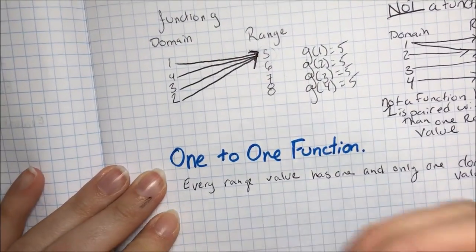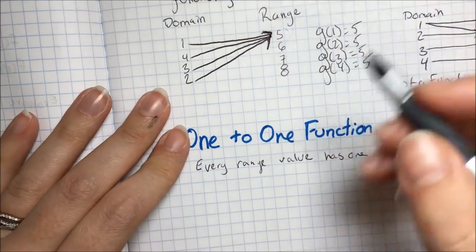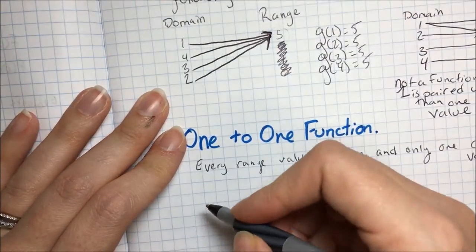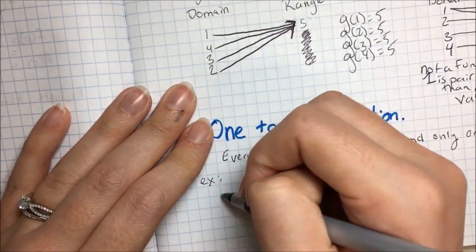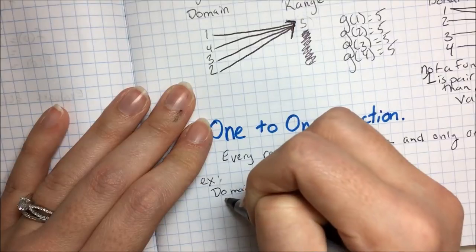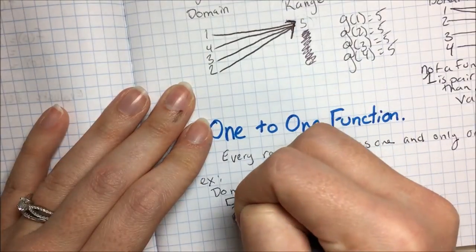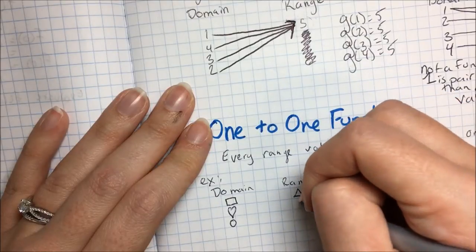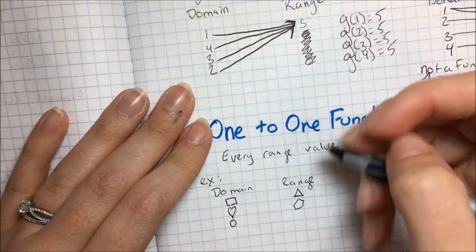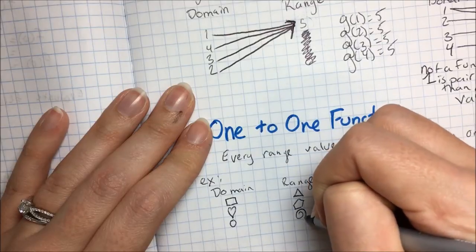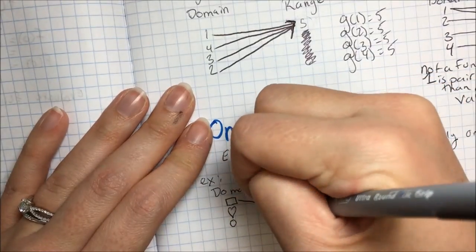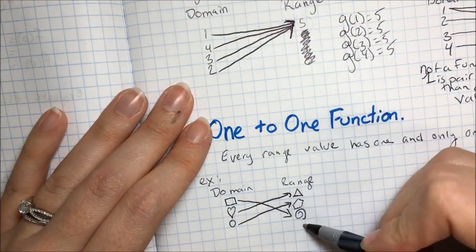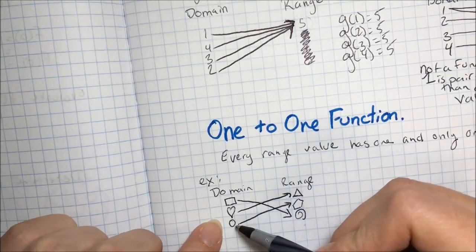A one-to-one function example: domain is box, heart, circle; range is triangle, pentagon, spiral. The box goes to the spiral, the heart goes to the triangle, and the circle goes to the pentagon. This is one-to-one because every one of my range values has one domain value, and it's a function because every one of my domain values has one range value.